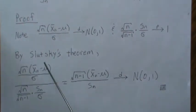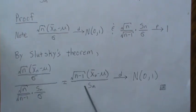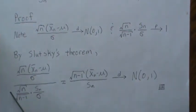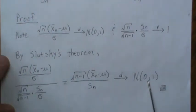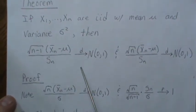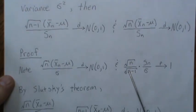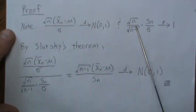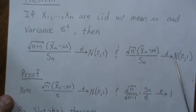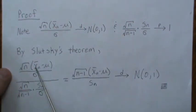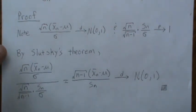Looking at that ratio, we take the CLT piece and divide by Sn/σ — the n's cancel and n−1 comes up — so the statistic using Sn converges in distribution to the standard normal. For the second result, we just drop the n/(n−1) constant, and it similarly converges to standard normal. That completes the proof, and it's a nice application of Slutsky's theorem from the last video.